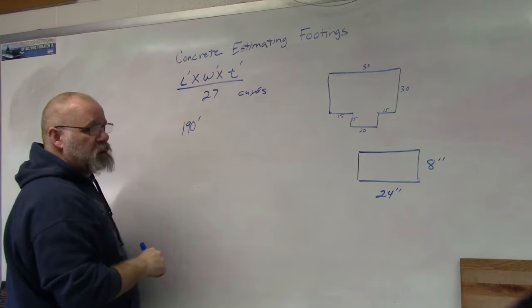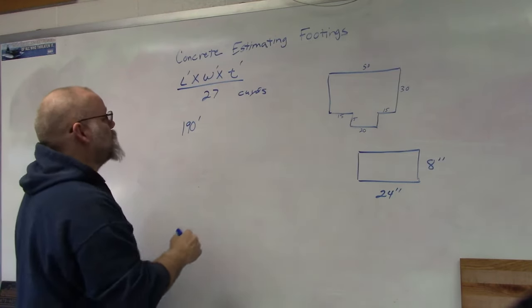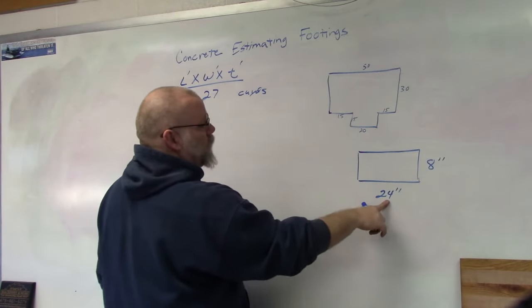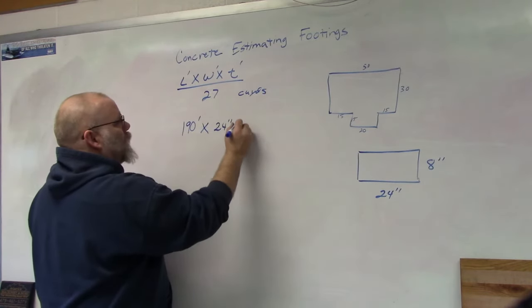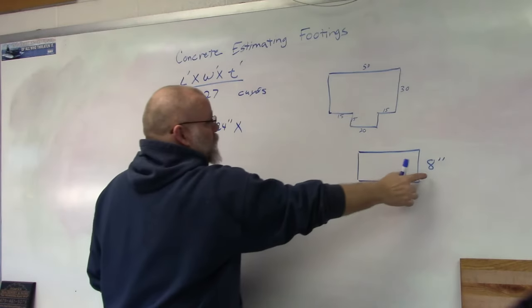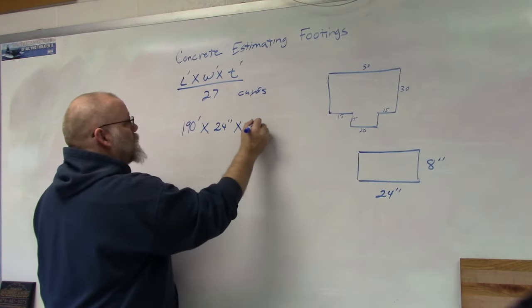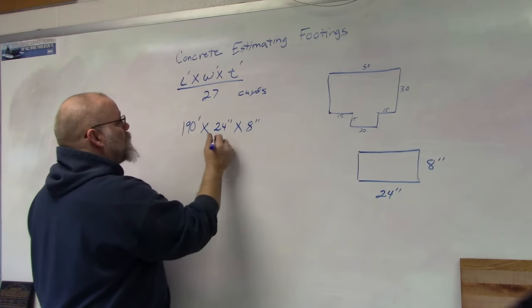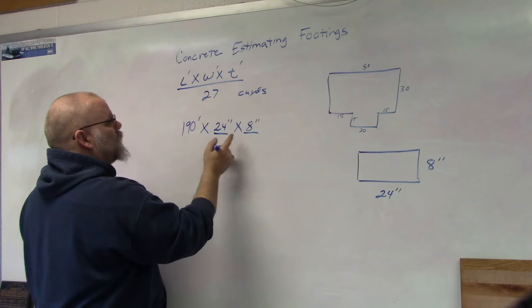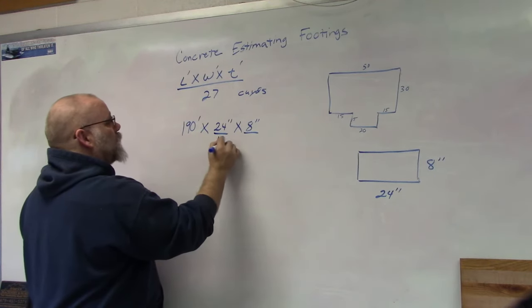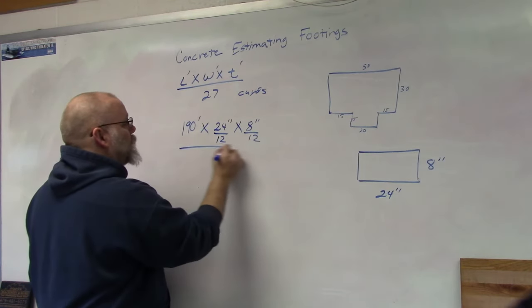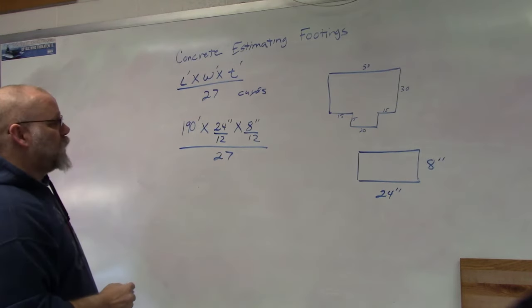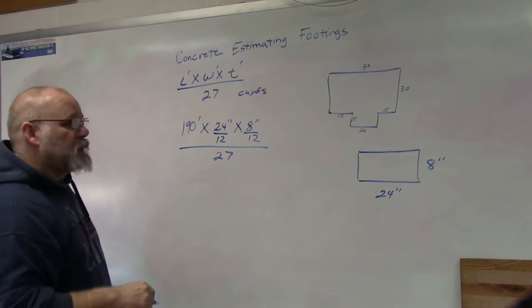We're going to multiply that times the width of the footing, which is 24 inches, and the thickness of the footing, which is going to be 8 inches. Now remember, we can't multiply feet and inches, so we want these in feet. We're going to convert these to feet by dividing by 12, then we take the whole thing and divide by 27.